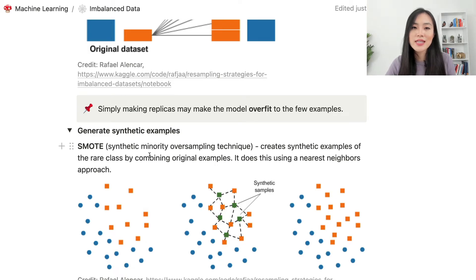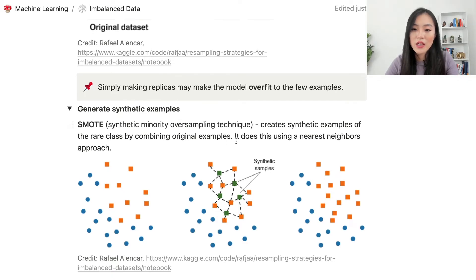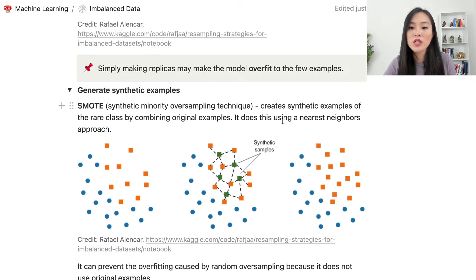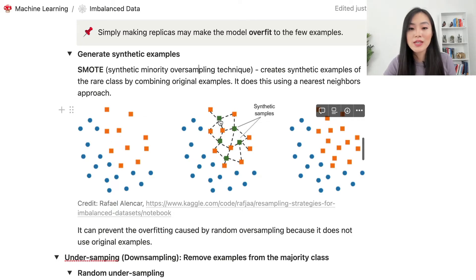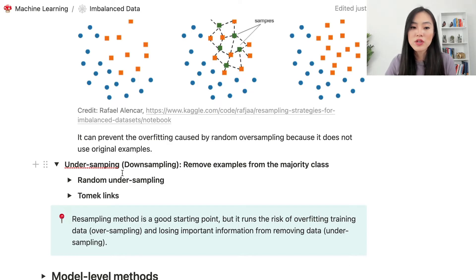Another approach is to generate synthetic examples. One popular method is SMOTE — Synthetic Minority Oversampling Technique. It creates synthetic examples of the rare class by combining original examples using a nearest neighbors approach. In the diagram, four nearest neighbors are used to create a new synthetic example for the minority class, which is then added to the training data. The advantage is that it can prevent overfitting, since it uses new examples similar to, but not identical to, the originals.